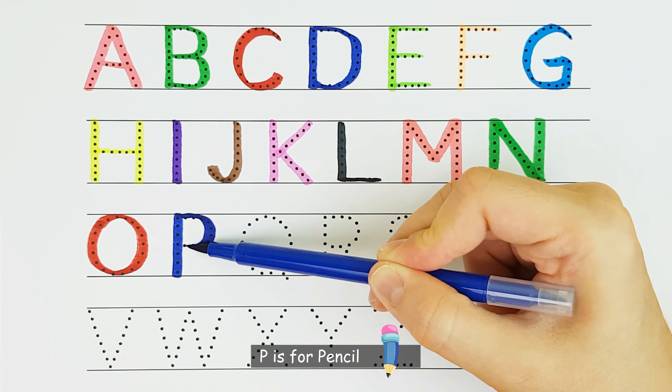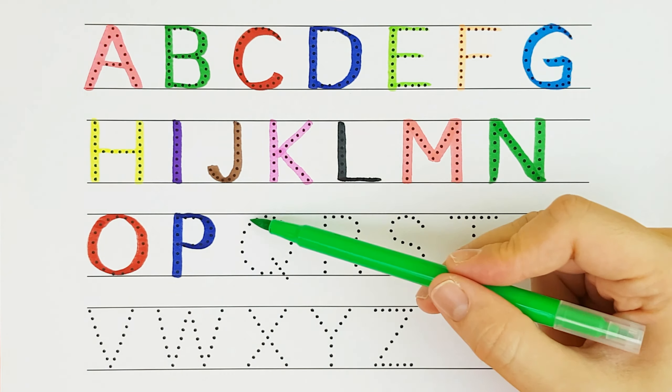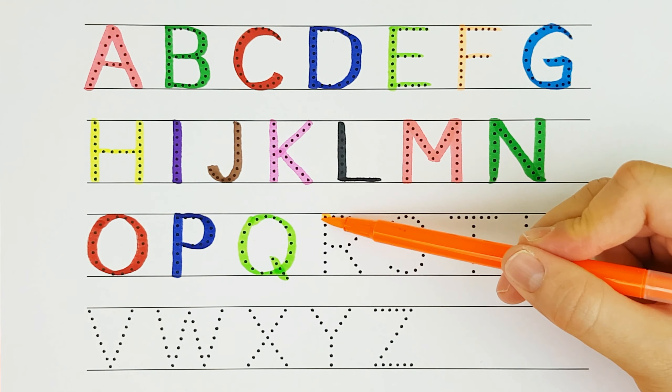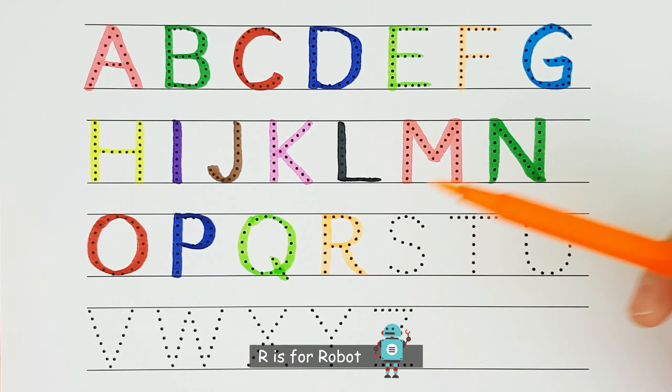P. P is for Pencil. P. Q. Q is for Quail. Q. R. R is for Robot. R.